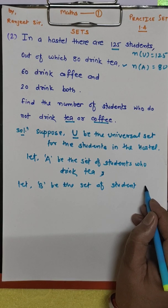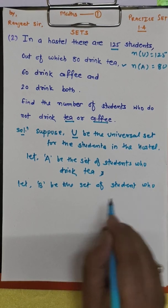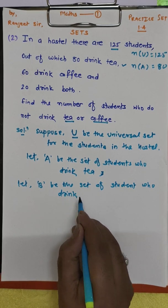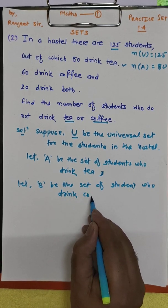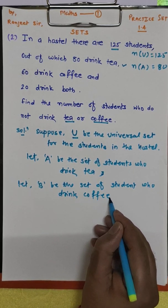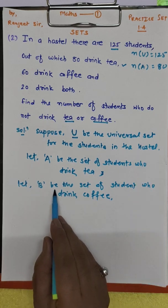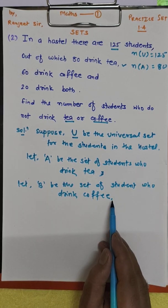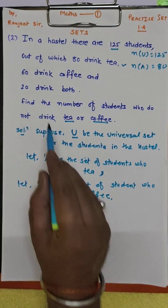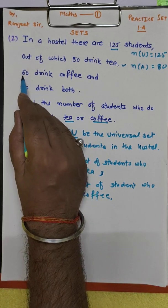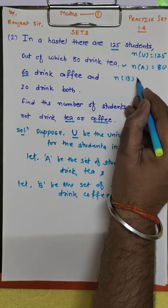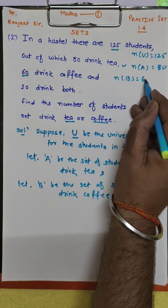Similarly, let B be the set of students who drink coffee. How many students drink coffee? 60 students drink coffee. So number of B is equal to 60.